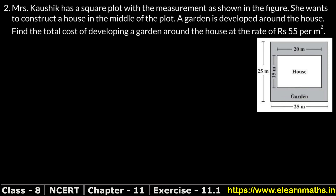Let's do question number 2 of exercise 11.1, that is mensuration. Mrs. Kaushik has a square plot with the measurement as shown in the figure. The square plot has all sides equal — each side is 25 meters. She wants to construct a house in the middle of the plot. The length of the house is 20 meters and the breadth is 15 meters.